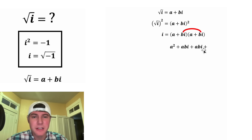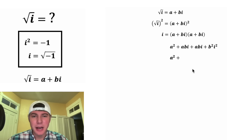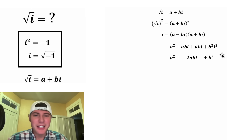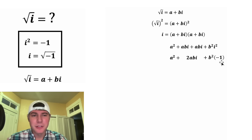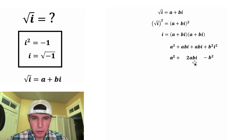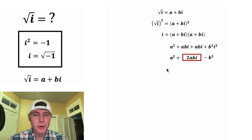And then bi times bi would be positive: b times b is b squared, and i times i is i squared. We can bring down a squared, the abi plus abi gives us 2abi, and then b squared. For the i squared, from our notes, i squared is equal to negative 1 — that's the definition of i. So we can rewrite i squared as negative 1, making positive b squared times negative 1 equal to negative b squared. The terms with i are the imaginary portion, and the terms without i are real.